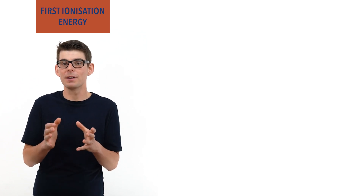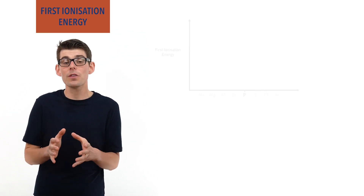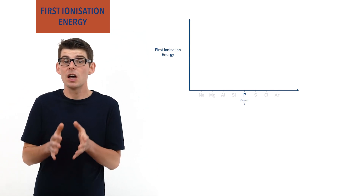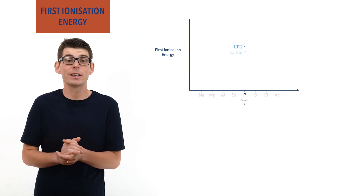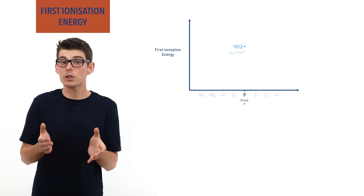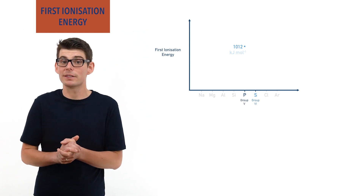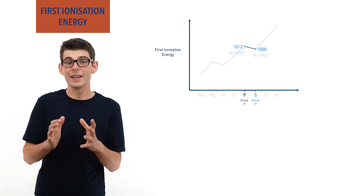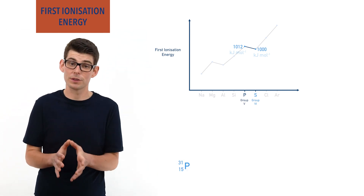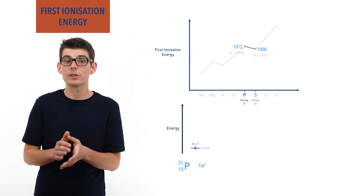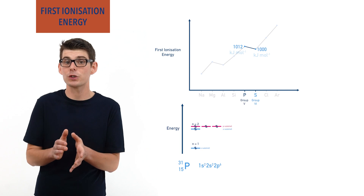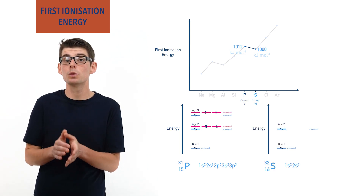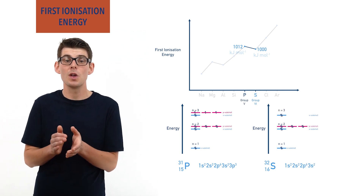For example, across period 3, phosphorus is in group 5 and has a first ionization energy of 1012 kJ/mol, and sulfur is in group 6 and has a first ionization energy of 1000 kJ/mol. The electron configuration for phosphorus is 1s², 2s², 2p⁶, 3s², 3p³, and for sulfur it is 1s², 2s², 2p⁶, 3s², 3p⁴.